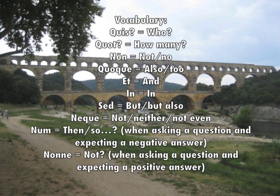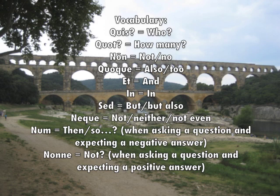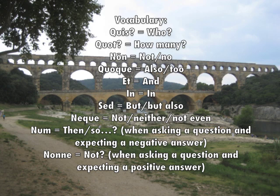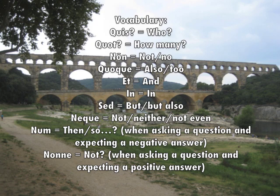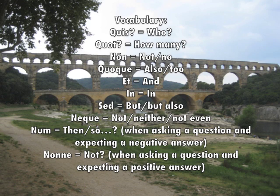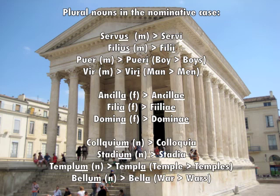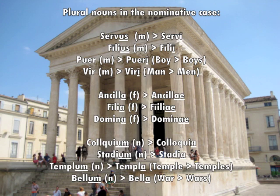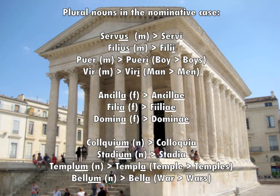Quoque — also. Et — and. In — in. Sed — but. Neque — not, neither, not even. Here we have some examples of plural nouns used in the dialogue. Masculine nouns such as servus will drop the -us and add a long -i with a macron above it, so servus will become servi.